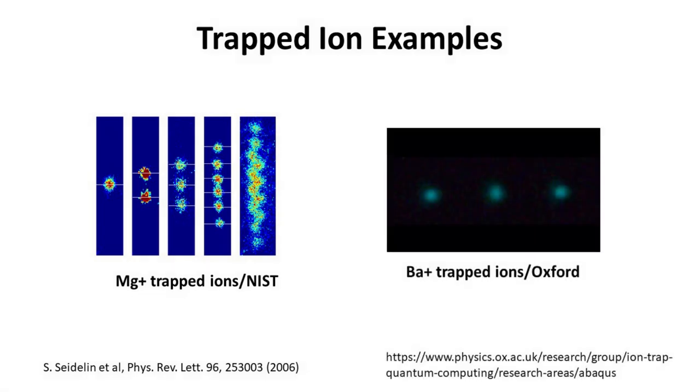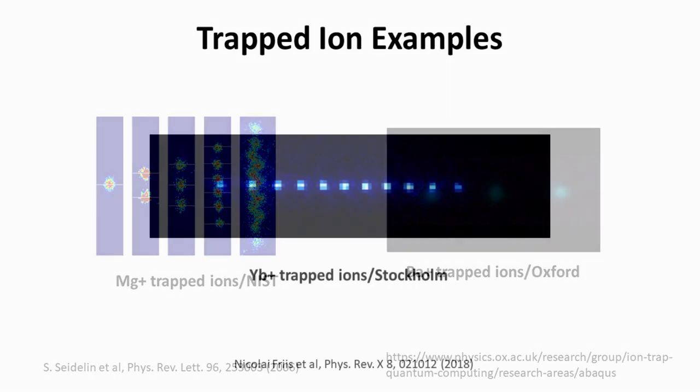The second example shows a chain of barium ions in an ion trap. This image is from the Abiquos project, led by the ion trap quantum computing research group at Oxford University. Finally, we show an image of trapped ytterbium ions in a linear trap. This image belongs to the trapped ion quantum technologies group from the physics department at the Stockholm University in Sweden.